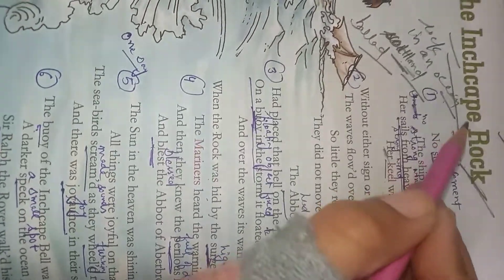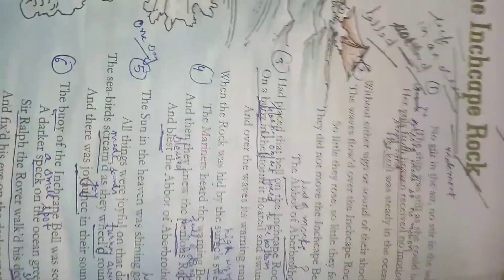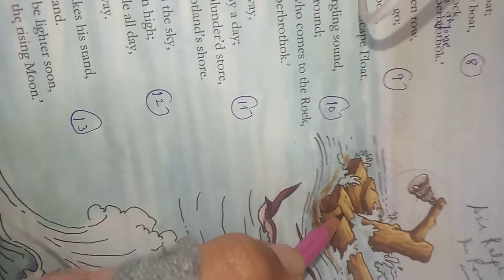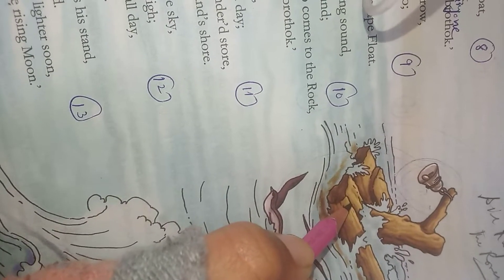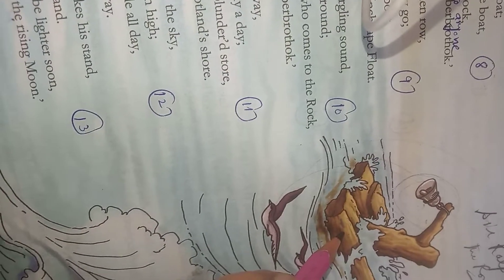The story is about, as the name implies, Inchcape Rock. Once in Scotland in the ocean, there was a rock. The name of the rock was Inchcape Rock, and it was so dangerous that if any boat was striking with it, the boat was wrecked, it was destroyed. And it is a story of 14th century.